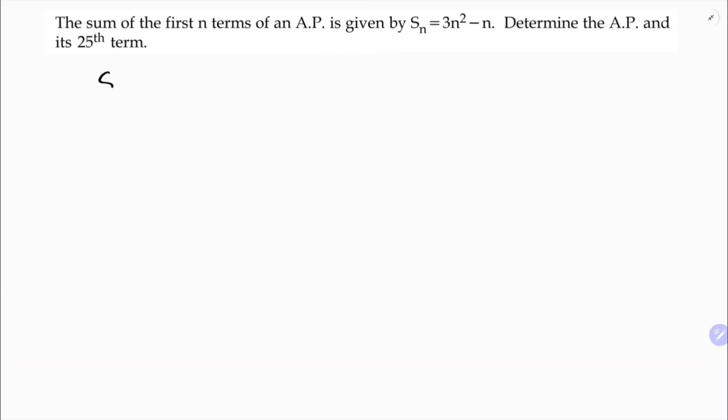If you do this problem like S_n equals 3n square minus n, first find S₁. So 3 into, in place of n substitute 1, so 3 into 1 is 3 minus 1 which is 2. S₁ is 2, so S₁ is the first term, so first term is 2.